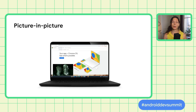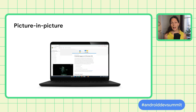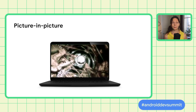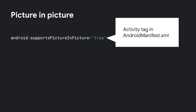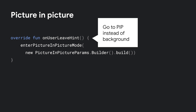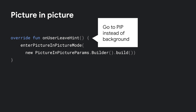Picture-in-picture now looks and works even better on Chrome OS. Using the standard Android picture-in-picture APIs will get you the newest appearance and functionality without additional effort. Start by indicating picture-in-picture support in the manifest file and then engage it with enterPictureInPictureMode. You could also automatically enter picture-in-picture when the user backgrounds your activity using onUserLeaveHint. Remember, you will likely want to adjust your UI in this mode — look for the callback onPictureInPictureModeChanged and make the necessary changes.